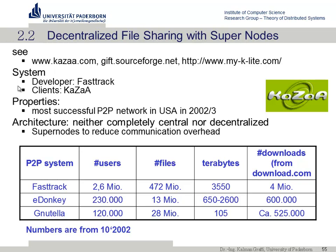Kazaa was the most famous user of this super node approach, very popular around 2002–2003. Previously, Morpheus was important but had issues. Looking at numbers from 2002, Kazaa had the most users and files. The idea was to introduce super nodes operated by user devices, combining central indexing like Napster for fast searches, without the unscalable overhead of Gnutella.